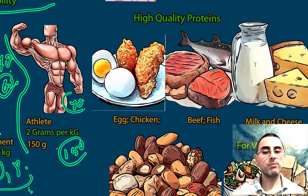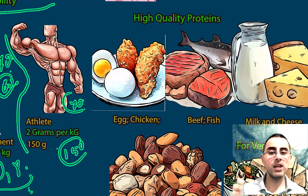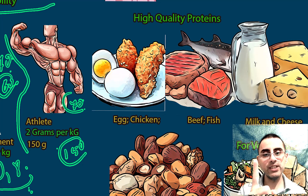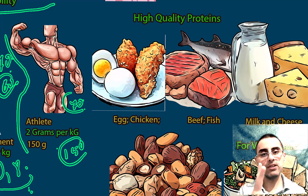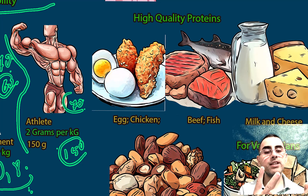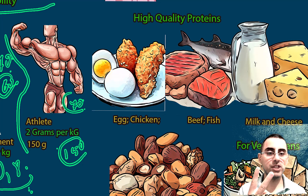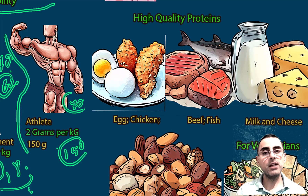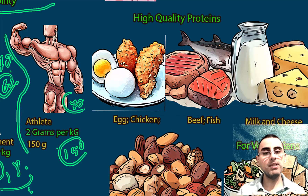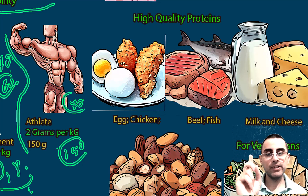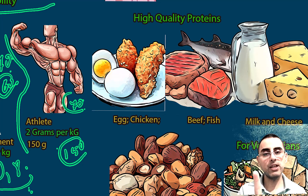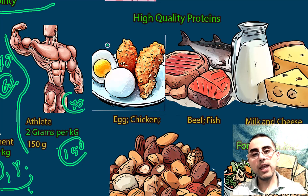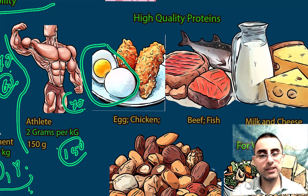Now let's define what high-quality protein means. When we say high-quality protein, we mean two things: first, the protein contains all essential amino acids; and second, the protein is easy to absorb and digest, with the majority of it actually being absorbed by the body.